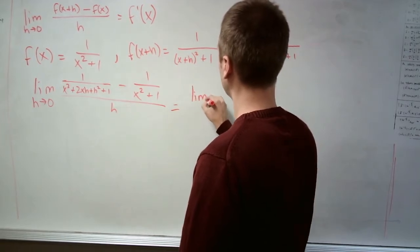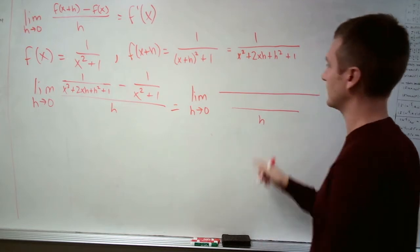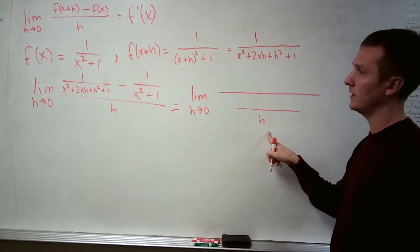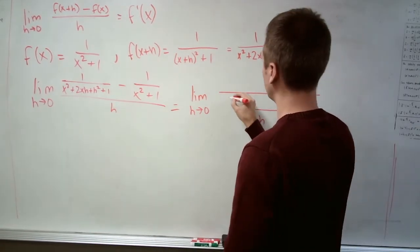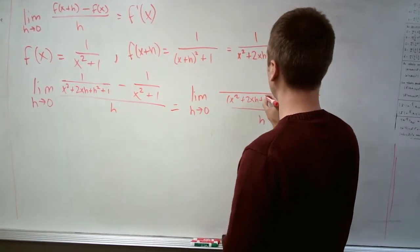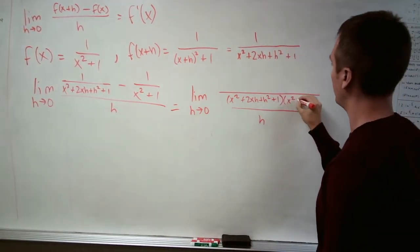So we're going to do that here, we've got the limit as h goes to zero. We have two fractions, a big fraction on top divided by h. The new denominator is the product of these two: x squared plus 2xh plus h squared plus 1, times x squared plus 1.